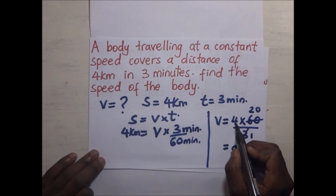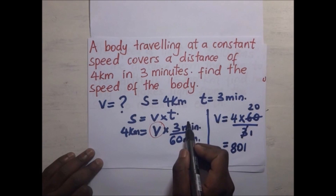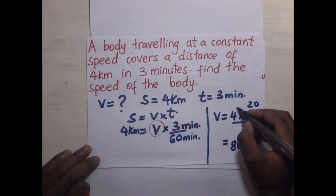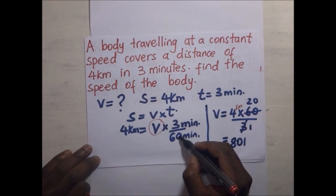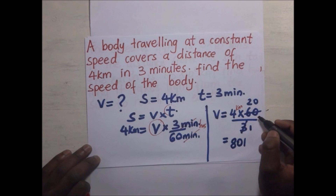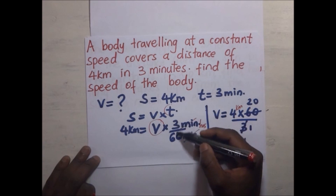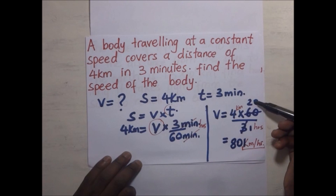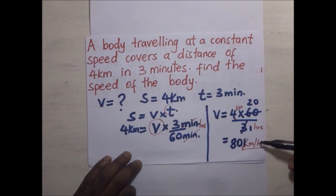After making V the subject: V equals 4 kilometers times 60 divided by 3, because we converted 3 minutes to 3/60 hours. This gives 4 times 20, which equals 80 kilometers per hour — wait, that simplifies to give us 80 kilometers per hour. The answer for the speed of the body is 80 kilometers per hour.